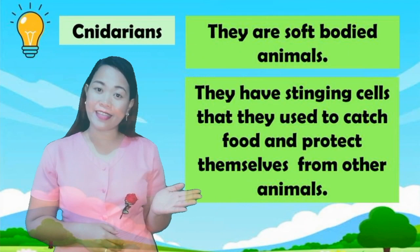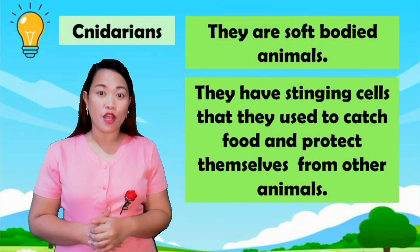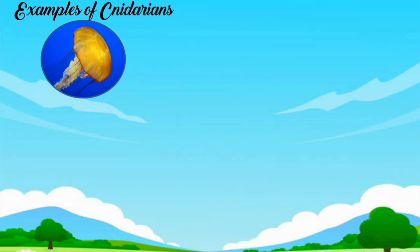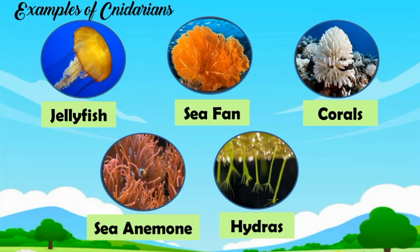Cnidarians are soft-bodied animals. They have sting cells that they use to catch food and protect themselves from other animals. Examples of cnidarians: jellyfish, sea fan, corals, sea anemone, hydra.